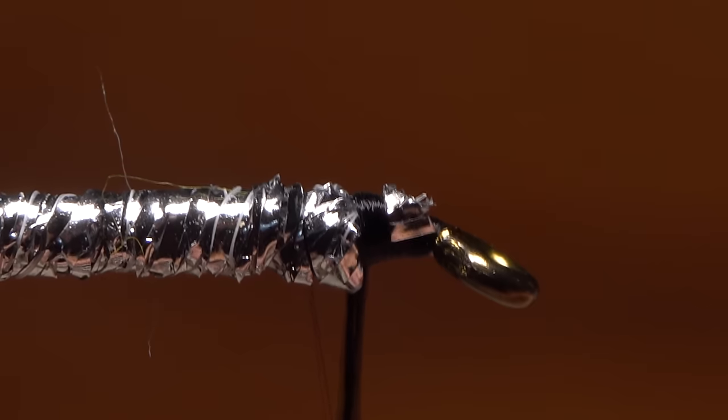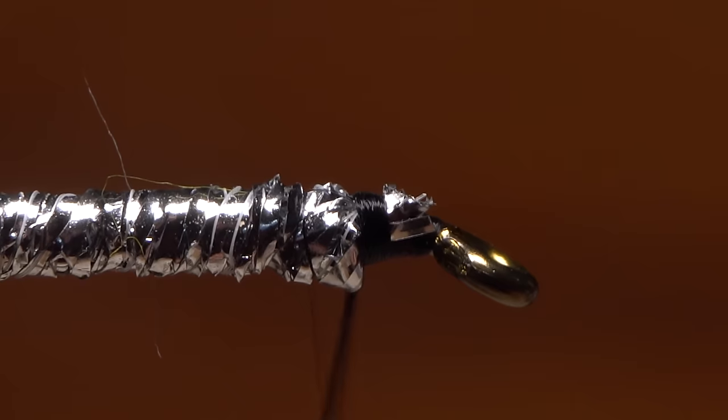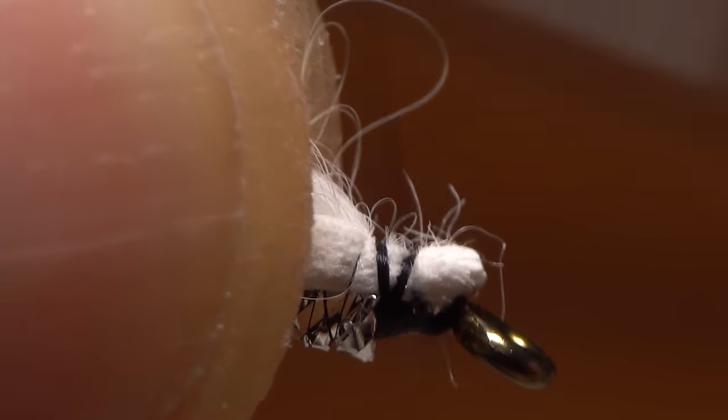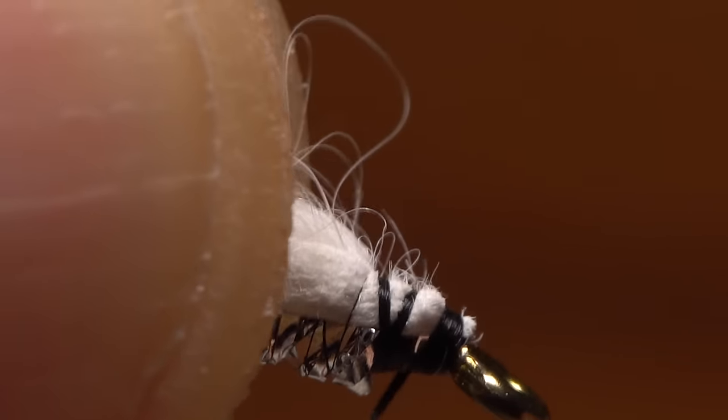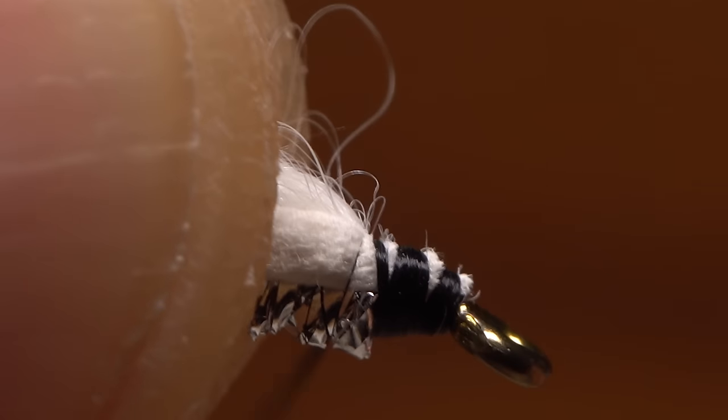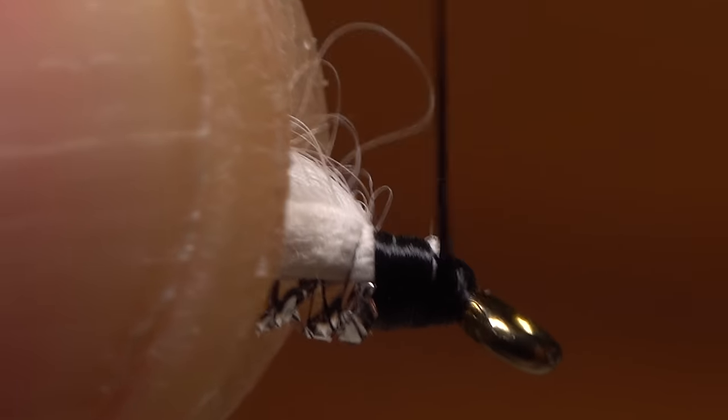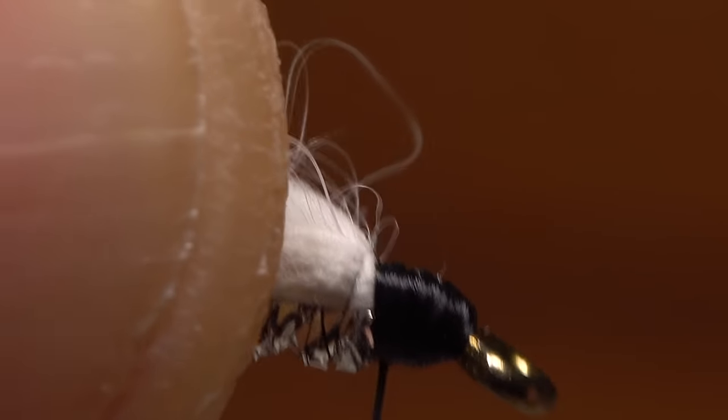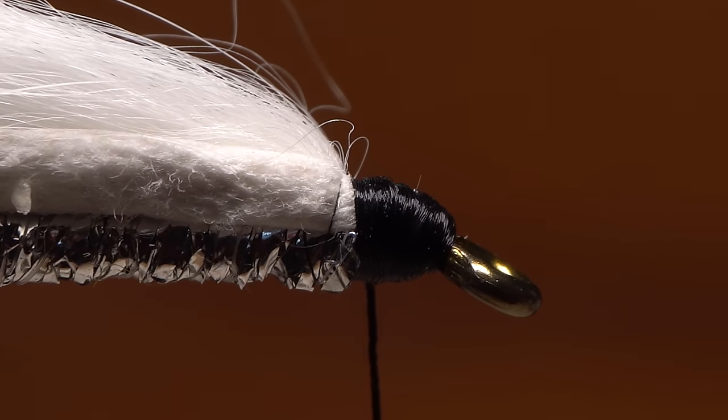Give your bobbin a good clockwise spin to cord up and strengthen your tying thread. Place the trimmed end of the zonker strip on top of the hook shank so its tip rests right at the back edge of the hook eye. Take firm thread wraps to bind the strip down. Because you cut those little leather corners off, you should find creating a smooth tapered head on the fly much easier than if you hadn't.